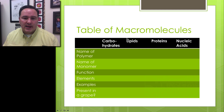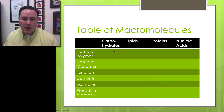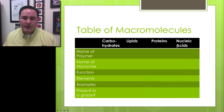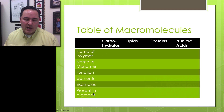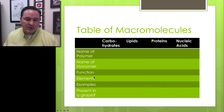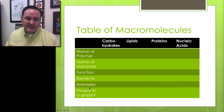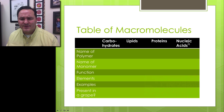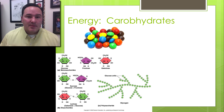Throughout this video, I'm going to be filling out a table of macromolecules. We'll go through four different categories of molecules: carbohydrates, lipids, proteins, and nucleic acids. For each, we'll identify the polymer name, monomer name, function, elements, and some examples. And just for fun — are all four of these things present in a grape? We'll reveal that as we go along.